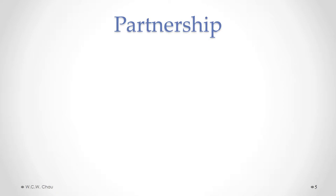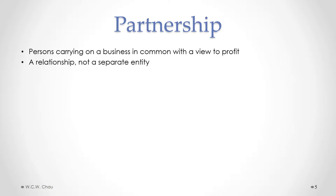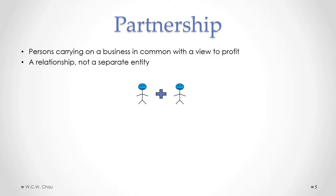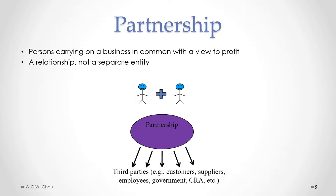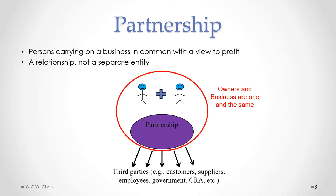Let's now have a look at the partnership. A partnership is considered to be one or more persons carrying on a business in common with a view to profit. Legally speaking, it's considered to be a relationship and not a separate legal entity. The partnership has dealings with outside third parties such as customers, suppliers, employees, and government. The key legal aspect of a partnership, just like with the sole proprietorship, is that the owners and the business are considered to be one and the same legally. So if the partnership owes money to someone, the partners themselves also personally owe that money.